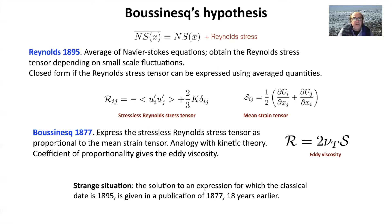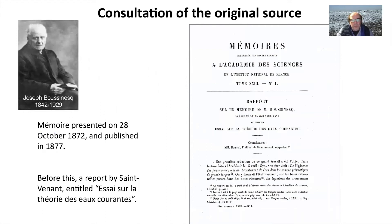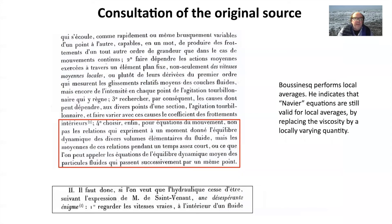Looking at the original source, Boussinesq in fact presented his work in 1872 in front of the French Academy of Science, but it was published only in 1877, with an introduction by Savernier. In this source, Boussinesq clearly makes averages of the Navier-Stokes equations, and simply changes the viscosity term — writing the same equation with a variable viscosity — and also mentions an enigma.